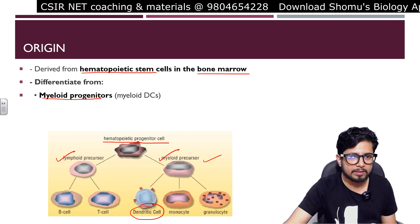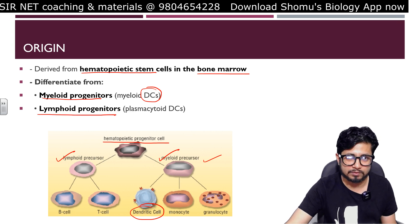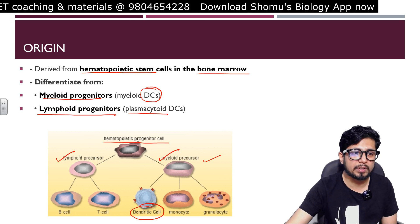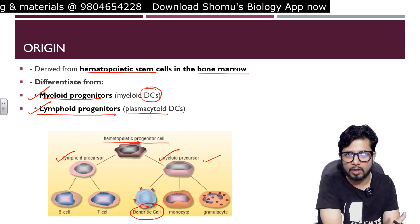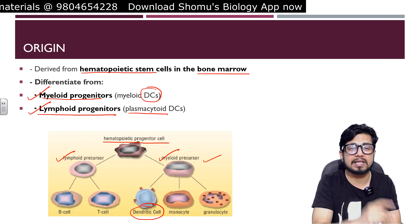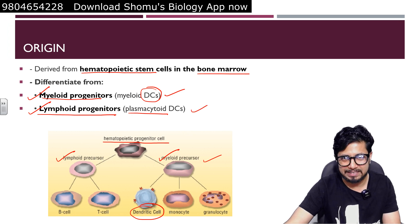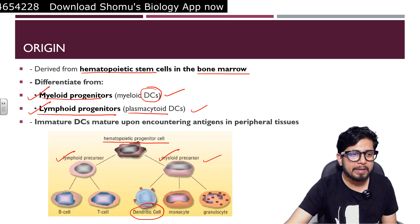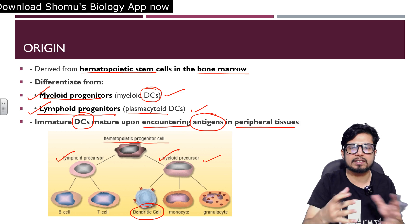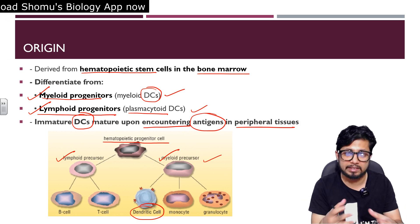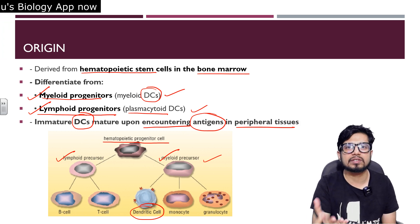Dendritic cells originate from the myeloid progenitor, known as myeloid dendritic cells, and there are certain dendritic cells produced from the lymphoid progenitor as well, known as plasmacytoid dendritic cells. So dendritic cells can originate from either myeloid or lymphoid progenitor cells. The immature dendritic cells mature upon encountering antigens in the peripheral tissue, moving through the bloodstream to encounter pathogens or pathogen fragments — the antigens — which activate them.